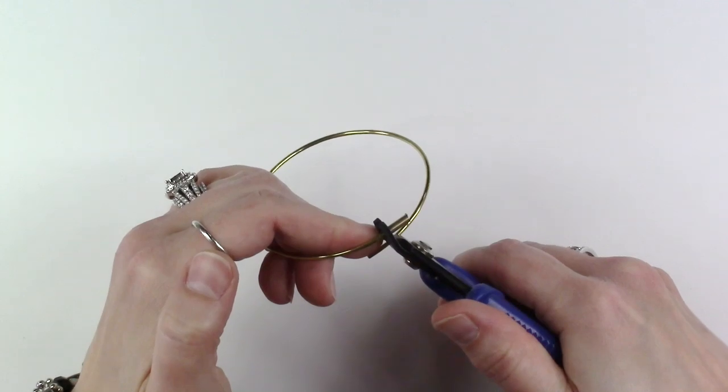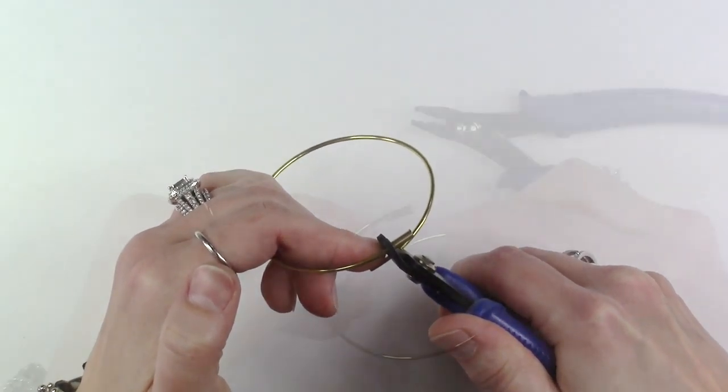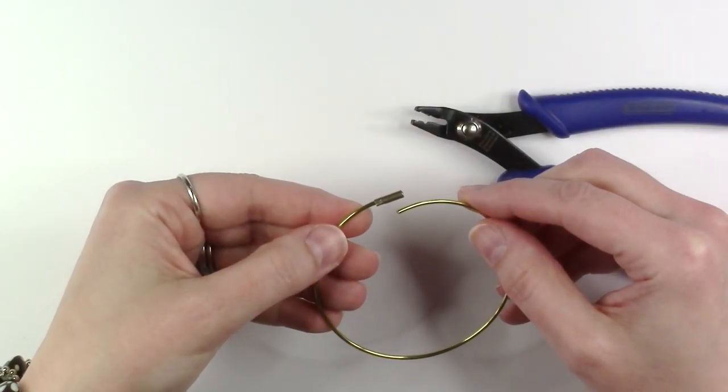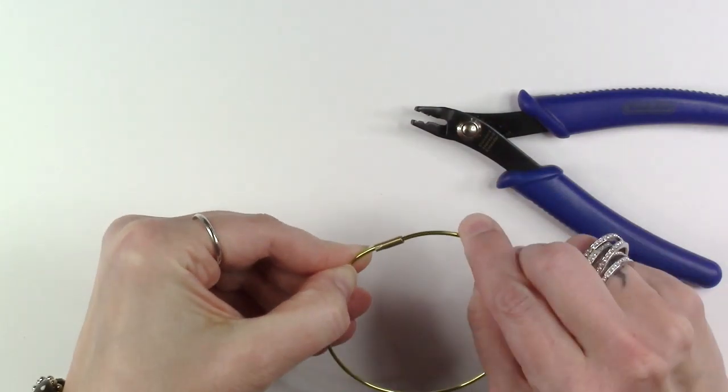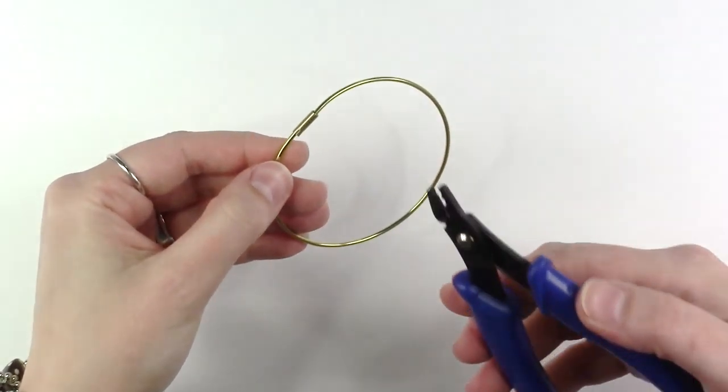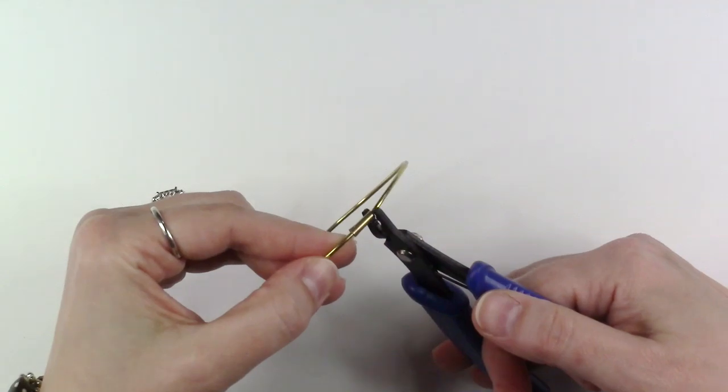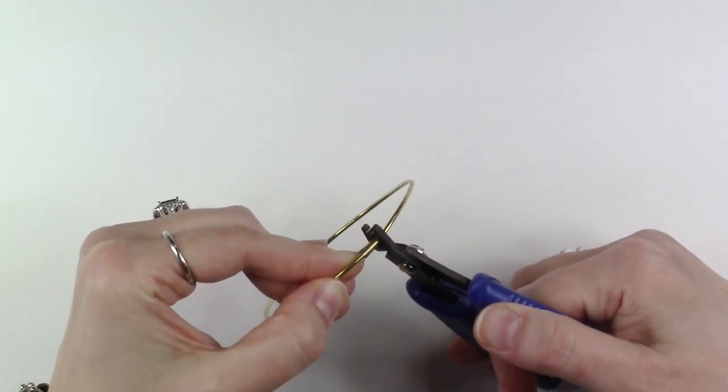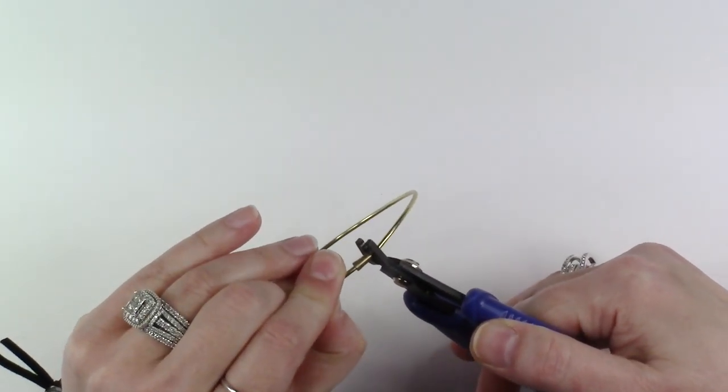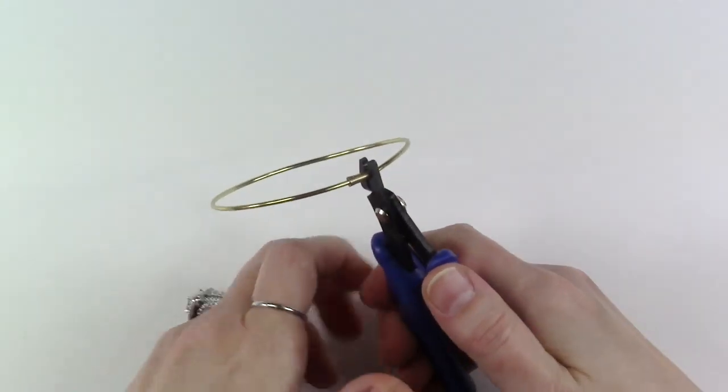Using your crimper tool, crimp down onto the crimp connector. Place the other end of the wire into the crimp connector. Using the back notch of your standard crimper tool, place the tool onto the side of the crimp connector and crimp the end.